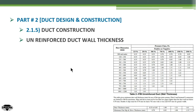Since a duct has two dimensions — width and height — and the width is usually larger, you always take the largest dimension. For example, for a duct of 70 cm width by 30 cm height, you take the 70 cm dimension and use it as the input in the first column.